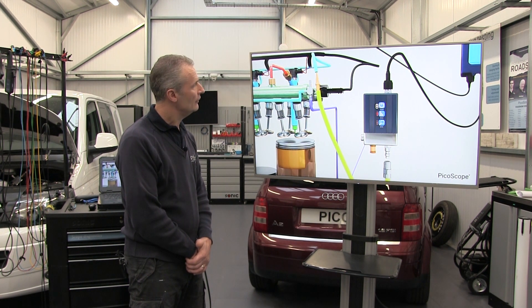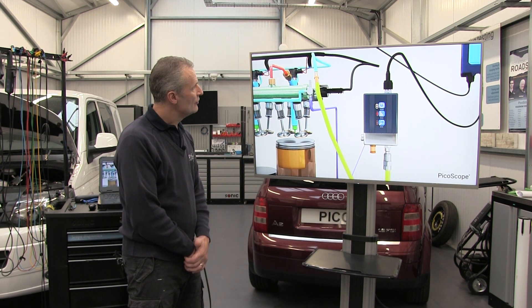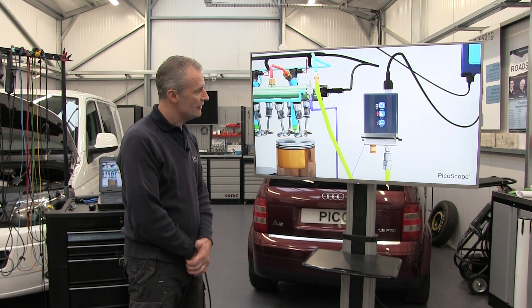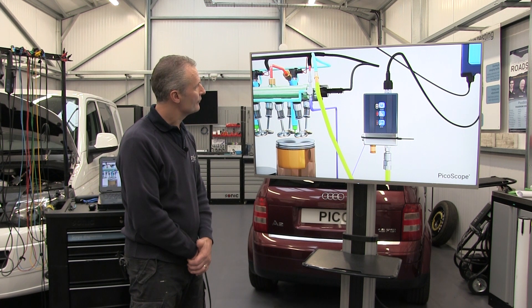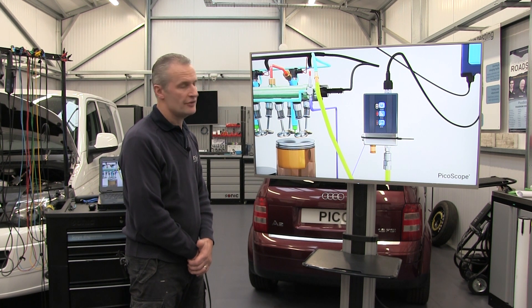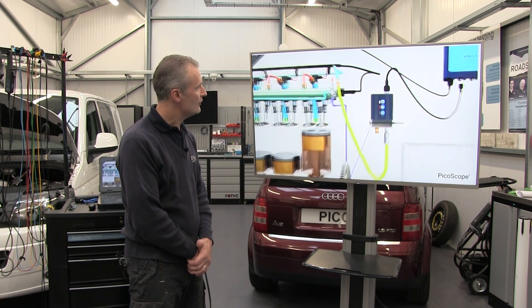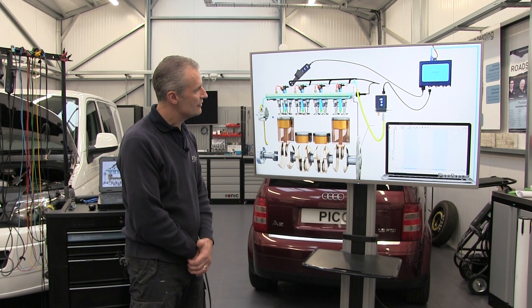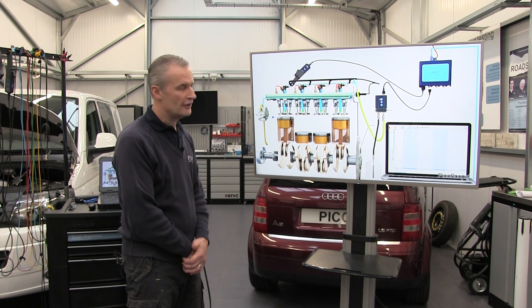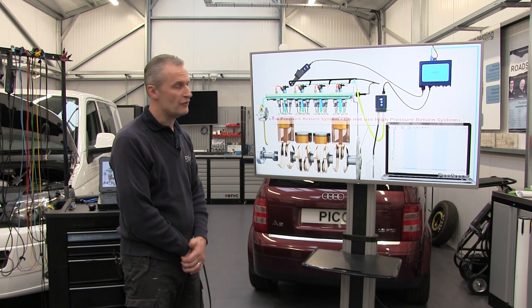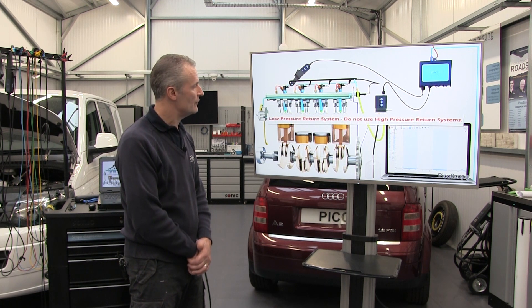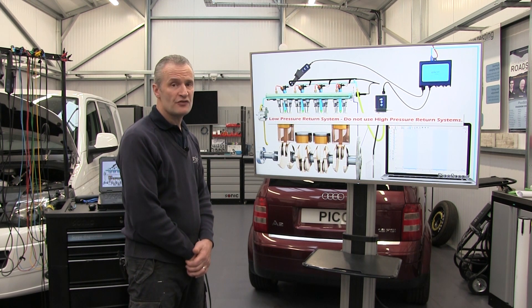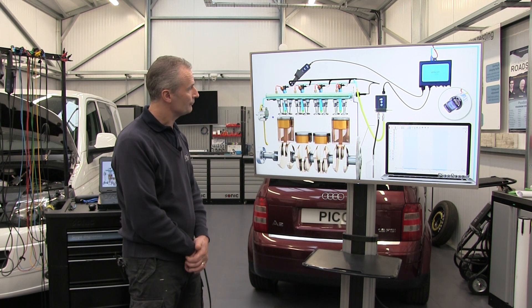We switch on the pressure transducer, ensure the test board is open and calibrated, remove the spill line, and place the diesel return back leakage into the pressure transducer. We open the drain tap and allow that to return to an external bottle so we can measure the volume of fluid coming off the back leakage. Remember, this is for a low pressure return system.